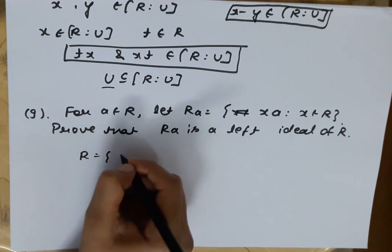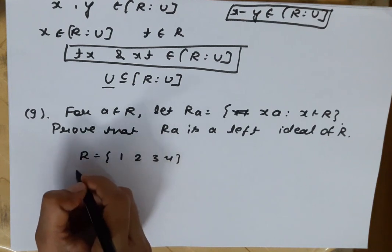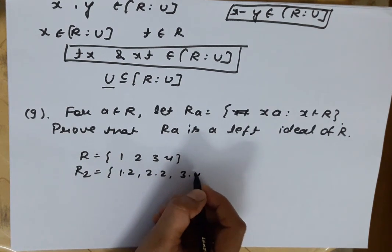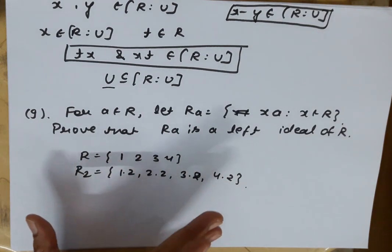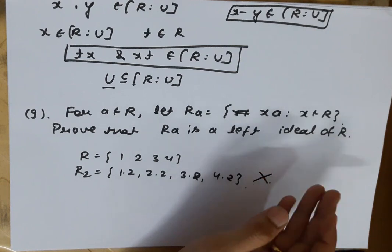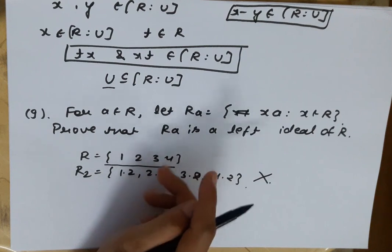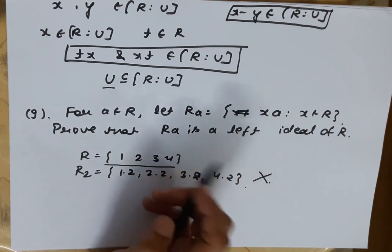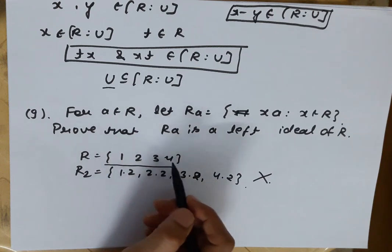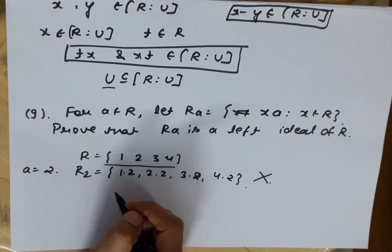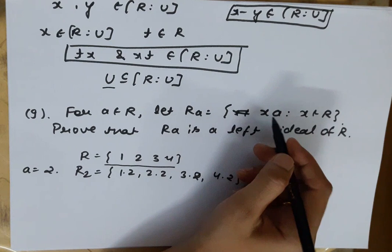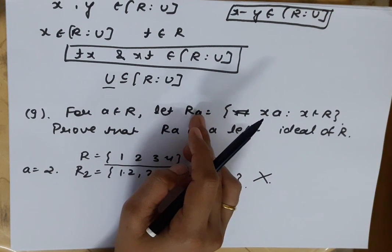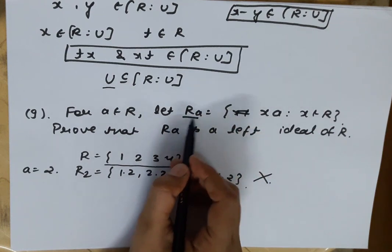We are taking a fixed element a ∈ R, and forming the collection R·a where we multiply every element of R by a on the right side. For example, if R has elements 1, 2, 3, 4 and a = 2, then R·a = {1·2, 2·2, 3·2, 4·2}. So R·a consists of all elements of R multiplied by a from the right side.